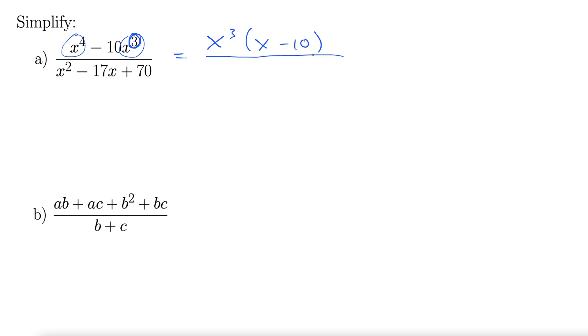Down below, looks like we're going to need to factor this thing here. So we're looking for factors of 70. So two numbers that multiply together to get 70, but add together to get negative 17.